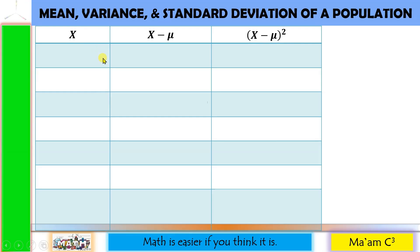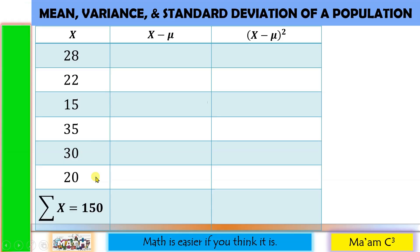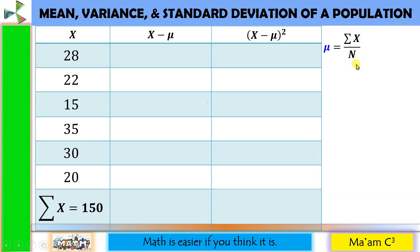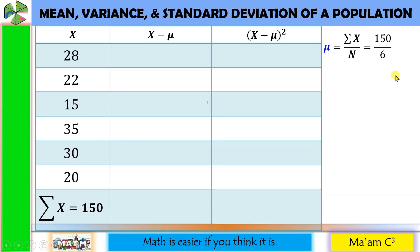For x, this is where we put our data — the height of the dogs. So we have 28, 22, 15, 35, 30, and 20. Adding these up gives us 150. This is the summation of x. Now we can compute the population mean. Since this is a population, the formula is mu equals summation of x over capital N. Summation of x is 150, and capital N, the size of the population, is 6. So 150 divided by 6 gives us 25. This is the population mean.